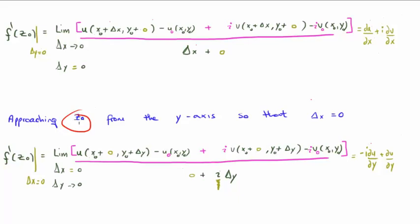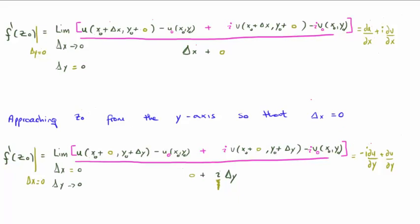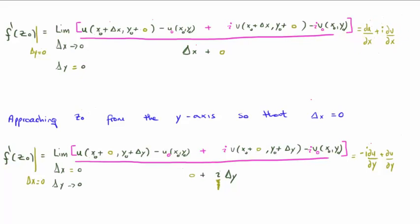Now we approach z zero from the imaginary direction, so we set delta x to zero. Setting delta x to zero gives us this expression. If you look carefully, you'll see we have negative iota del u del y plus del v del y. Note that I've moved iota from the denominator to the numerator by multiplying by iota over iota, which is simply one. So holding the imaginary component fixed gives the first set of partial derivatives, and fixing the real component while varying the imaginary gives this second set.